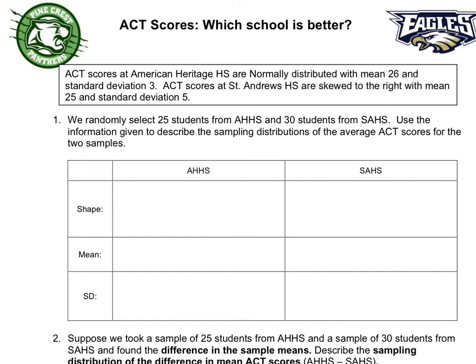Continuing our discussion of ACT scores: ACT scores at American Heritage High School are normally distributed with a mean of 26 and a standard deviation of 3. ACT scores at St. Andrews High School are skewed to the right with a mean of 25 and a standard deviation of 5. We randomly select 25 students from American Heritage and 30 students from St. Andrews. Use the information given to describe the sampling distributions of the average ACT scores for the two samples.